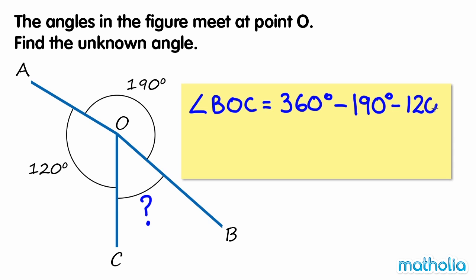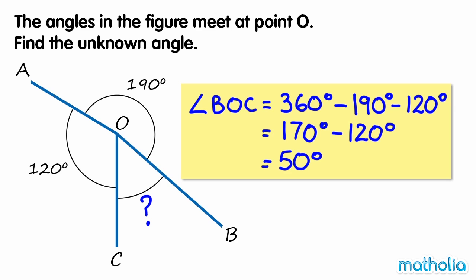360 degrees minus 190 degrees minus 120 degrees equals 50 degrees. So the unknown angle, angle BOC, equals 50 degrees.